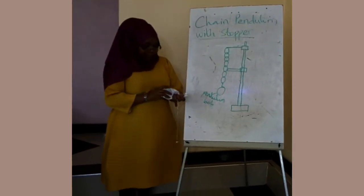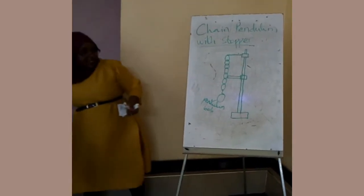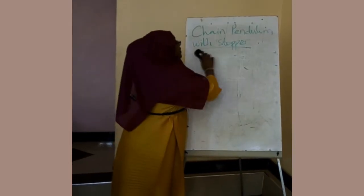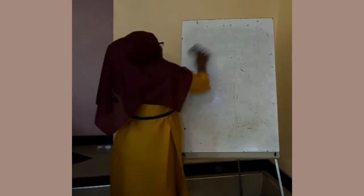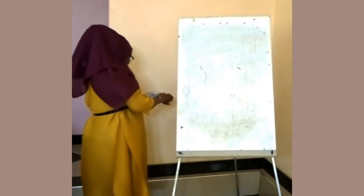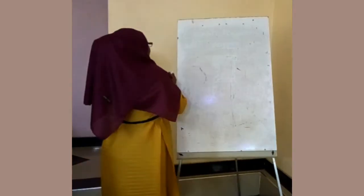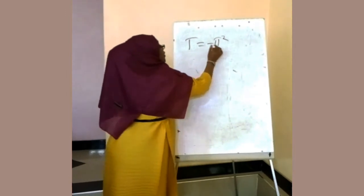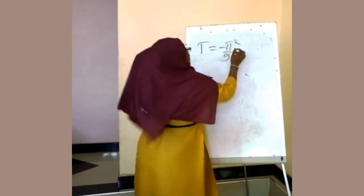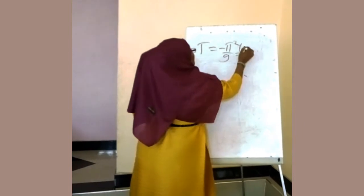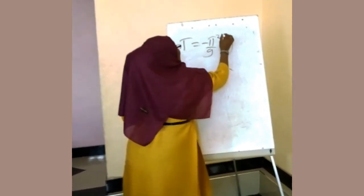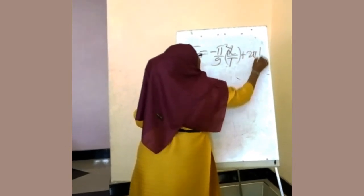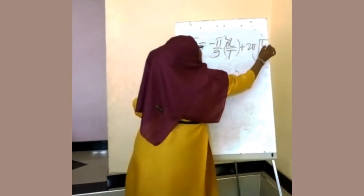So in this experiment, we have been using the formula for the periodic time T. The periodic time T is equal to negative pi squared over G, times L over T. But in this case, we are using the number of paper clips plus 2π under the root of L over G.